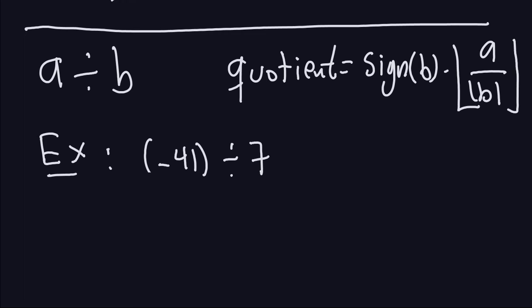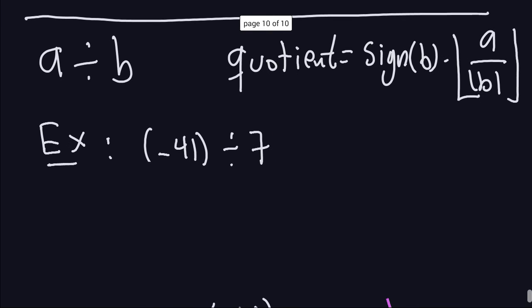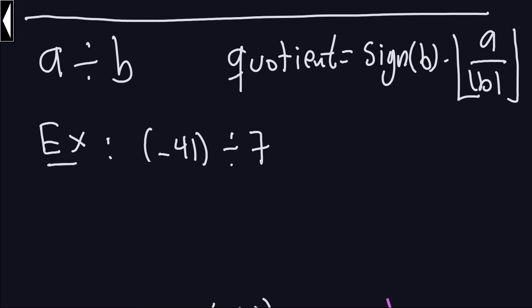Let's say we want to compute the quotient and remainder of negative 41 divided by 7. If you try to do it the old way — thinking about the algorithm you learned in primary school — you're going to go ahead and say...